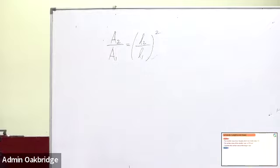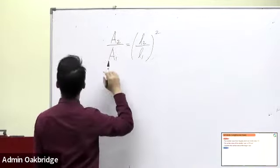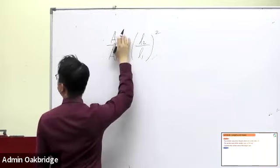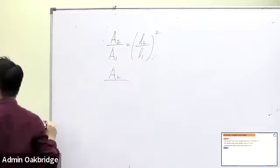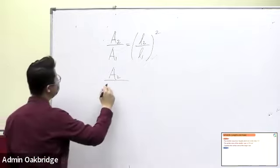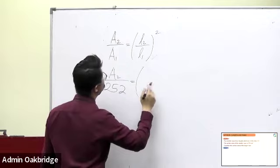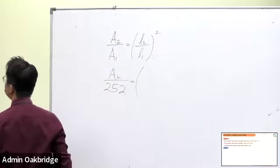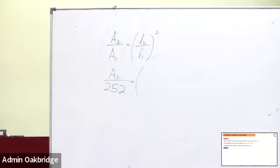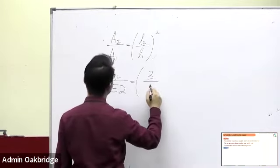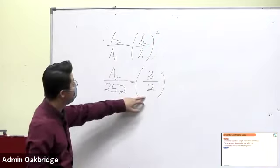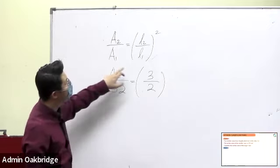And you want to find the surface area of the larger base — that's A2. A2 is what you want to find, so just leave it as A2. What is the surface area for the smaller one? 252. And what's the length for the bigger one? You don't know, but this question gives you the ratio. The bigger one represents the length for the bigger one, so you should write the fraction as 3 over 2. Bigger one over smaller one, because A2 is the bigger one, so 3 needs to be the bigger one.